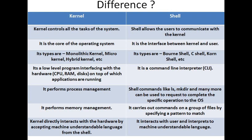Finally, talking about the differences between kernel and shell: the kernel controls all the tasks of the system, while the shell allows the user to communicate with the kernel. The kernel is the core of the operating system; the shell is the interface between kernel and user. Types of kernel include monolithic, microkernel, and hybrid kernel. Types of shell include Bourne shell, C shell, and Korn shell. The shell is a command line interpreter, and the kernel is a low-level programming interface with hardware — including CPU, RAM, and hard drive.